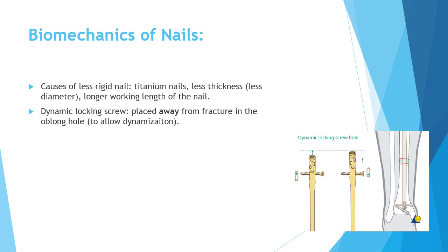To make a less rigid nail construct: first, less thickness — since the diameter is related to stiffness to the fourth power, a thinner nail is less stiff. Second, a larger working distance, meaning the screws are further away from the fracture, makes the nail less rigid. Additionally, titanium nails are less rigid than stainless steel nails.